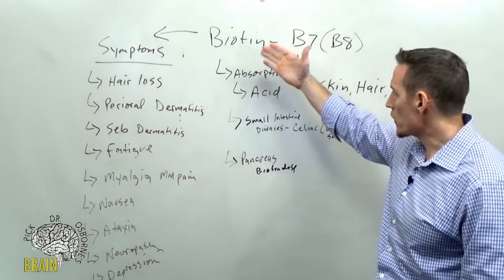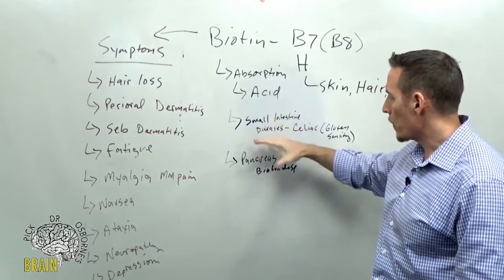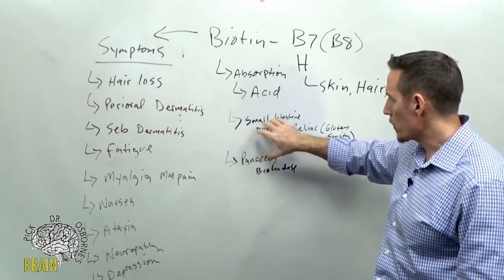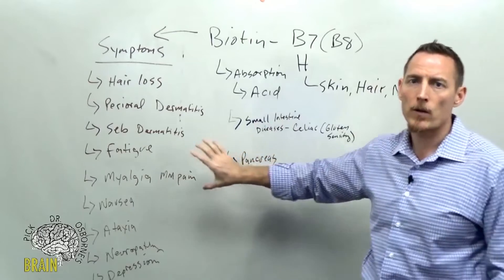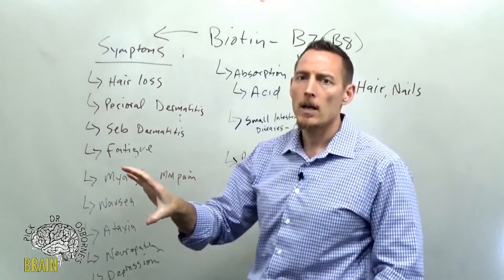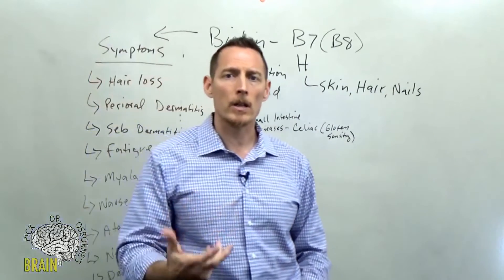Again, you need stomach acid, it's absorbed in the small intestine, but part of that absorption is the brush border doing its job, and part of that absorption requires your pancreas to be functioning to produce biotinidase to help you take that biotin up into the bloodstream directly.